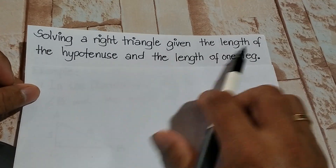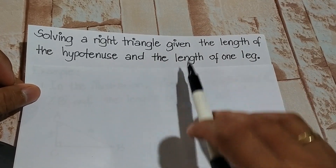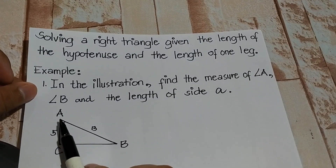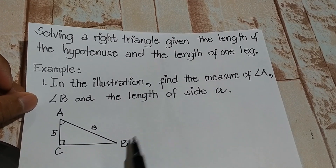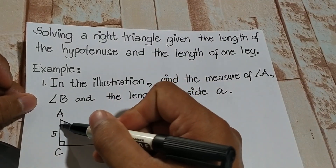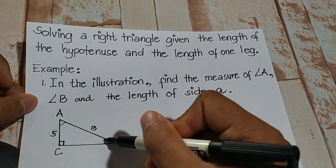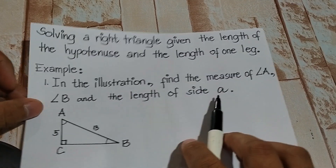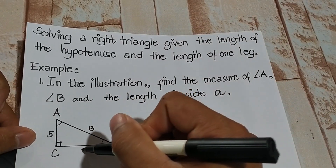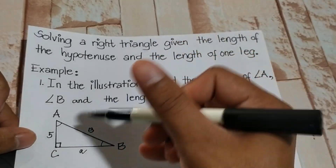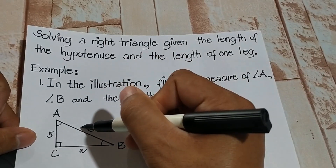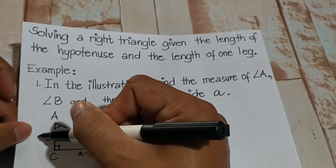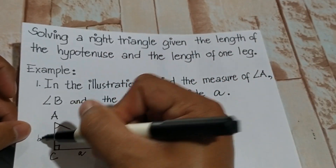Suppose this is our problem. In this illustration, we are asked to find the measure of angle A, the measure of angle B, and the length of side A. So this would be our side A, this would be our side C which is our hypotenuse, and our side B is equal to 5.